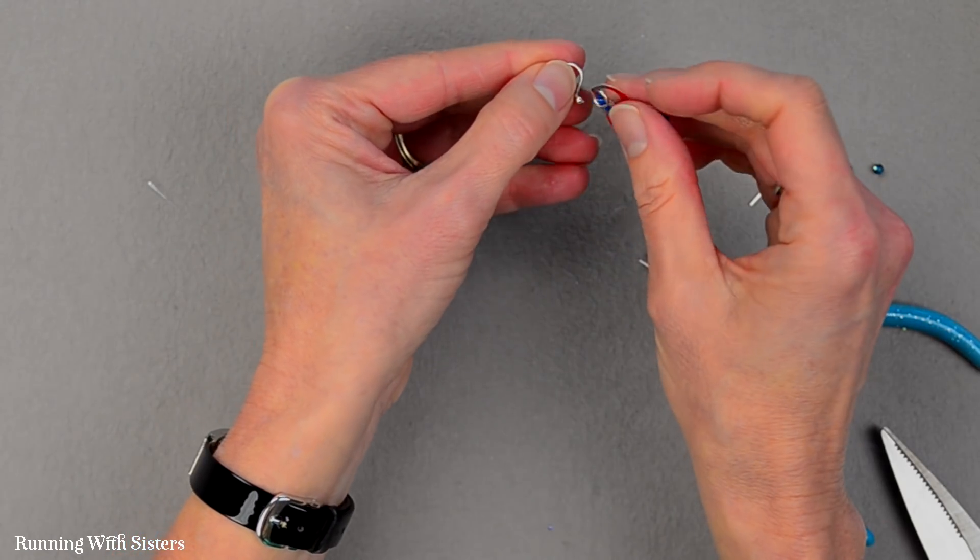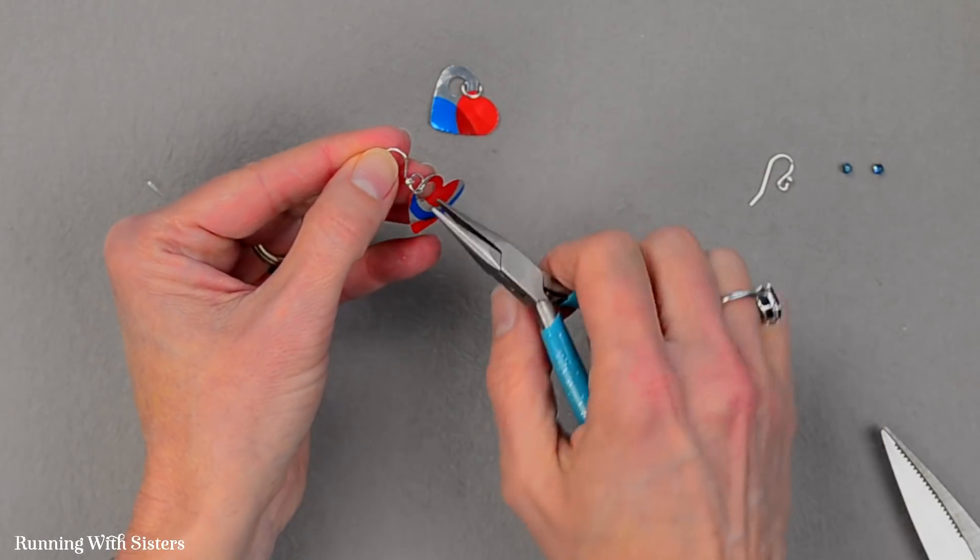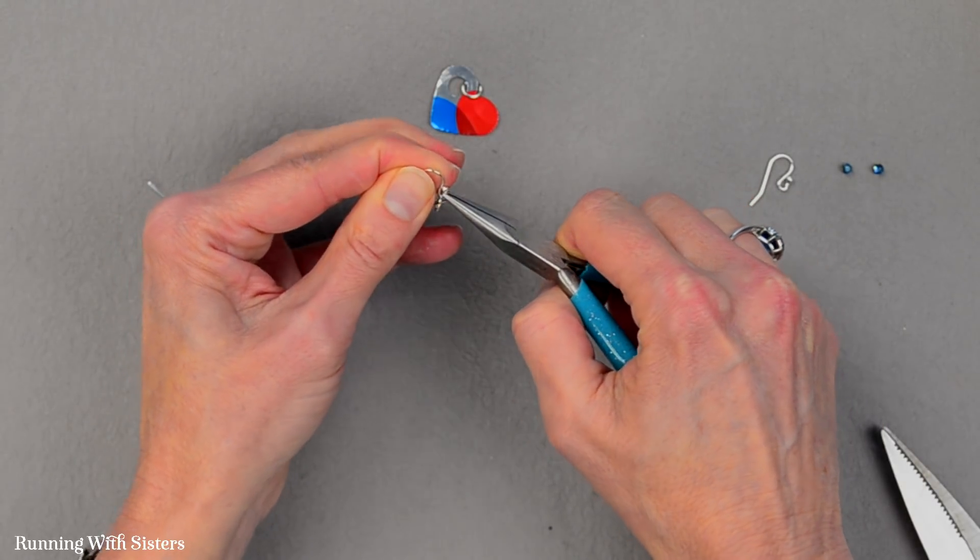And now I'm just going to hang my jump ring on that loop and close the loop on my earring wire.